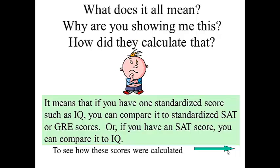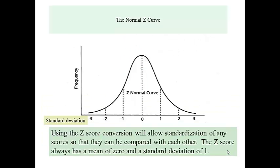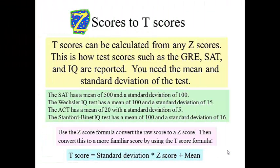So how are these scores alike and how are they different? The Z score conversion is where you take scores and make a mean of 0 and a standard deviation of 1. Using these Z scores, you can then calculate T scores. A T score simply takes the standard deviation times the Z score and adds the mean to it. You can go from the T score to the Z score and back.